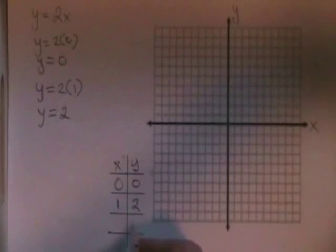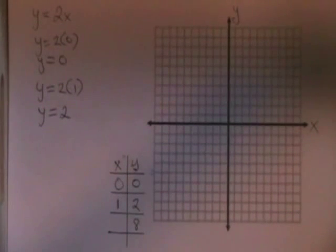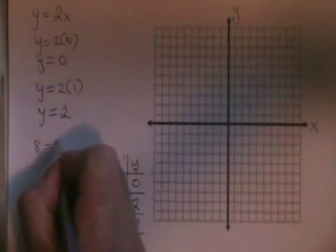Let's make y equal to 8 for our third point. If y equals 8, y equals 2x becomes 8 equals 2x.